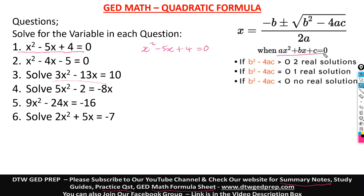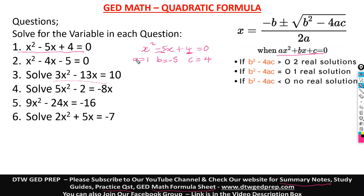So what is A here? A is 1 — when you don't see a number, there's an invisible 1. B is negative 5. And C, the constant without any variable, is positive 4. When you have A, B, and C, always write them down before you get onto the formula. Now you compute them into the formula: x equals negative B — our B is negative 5, but there's already a negative in the formula — so put the negative, then in parentheses your B, which is negative 5.